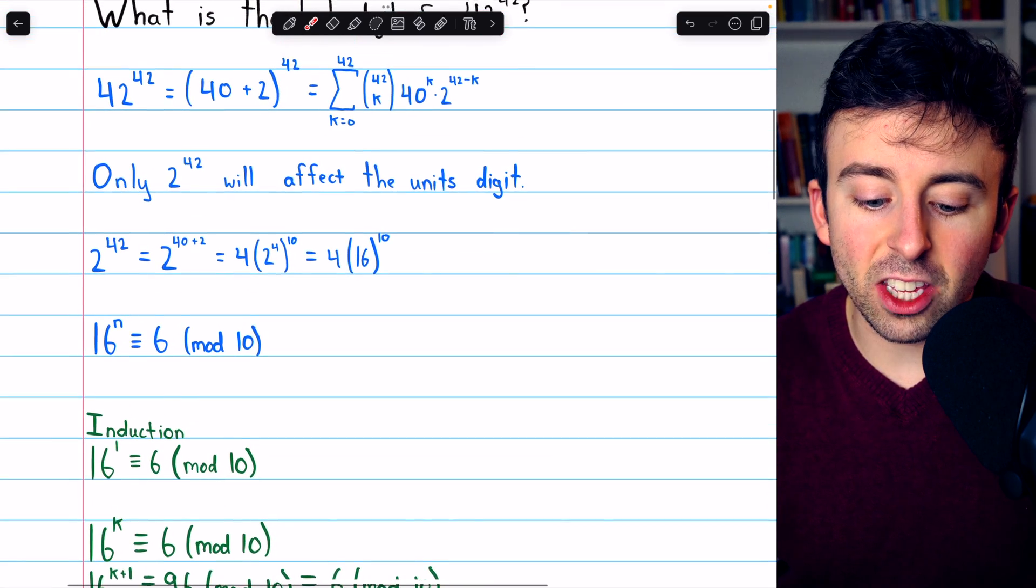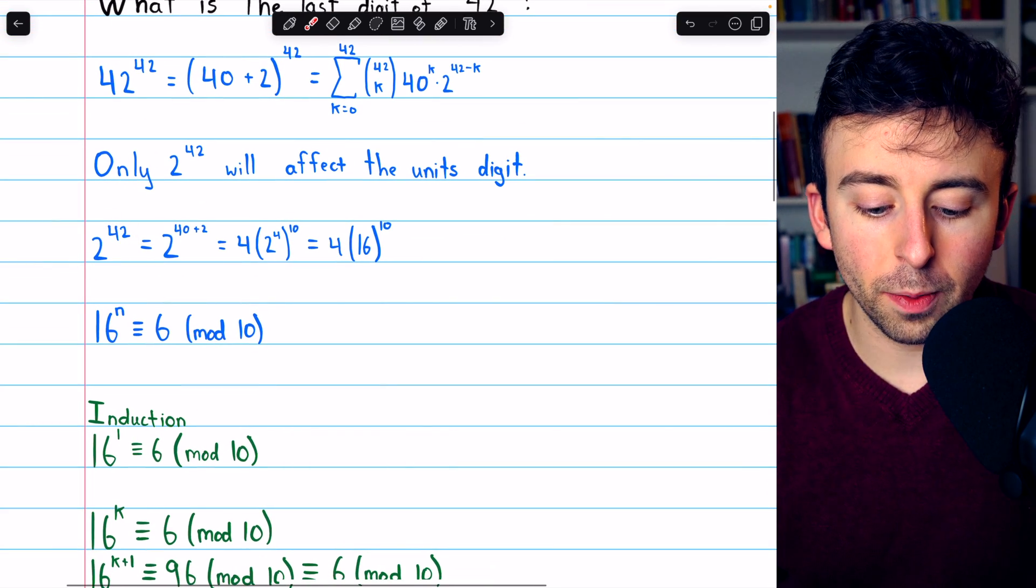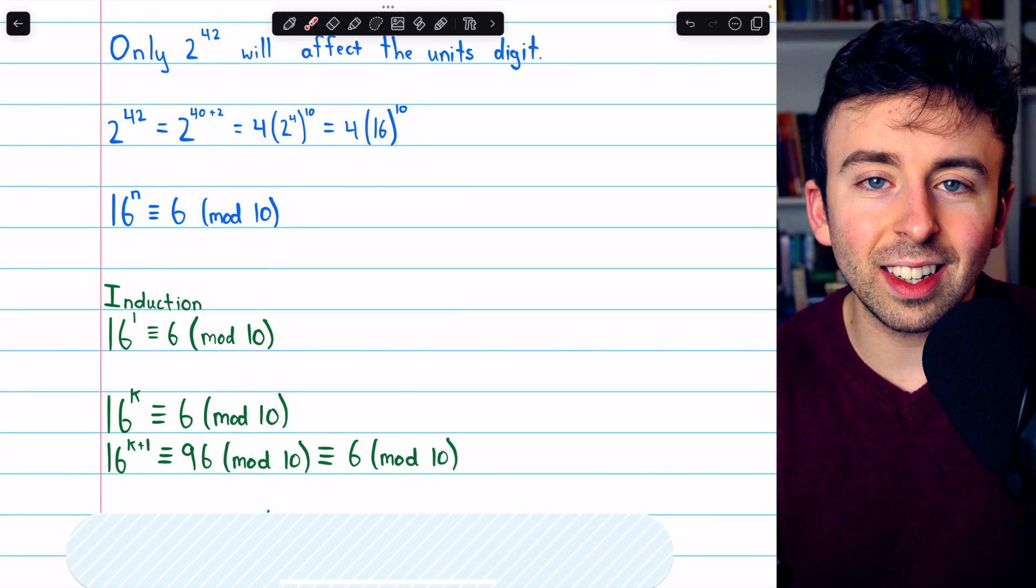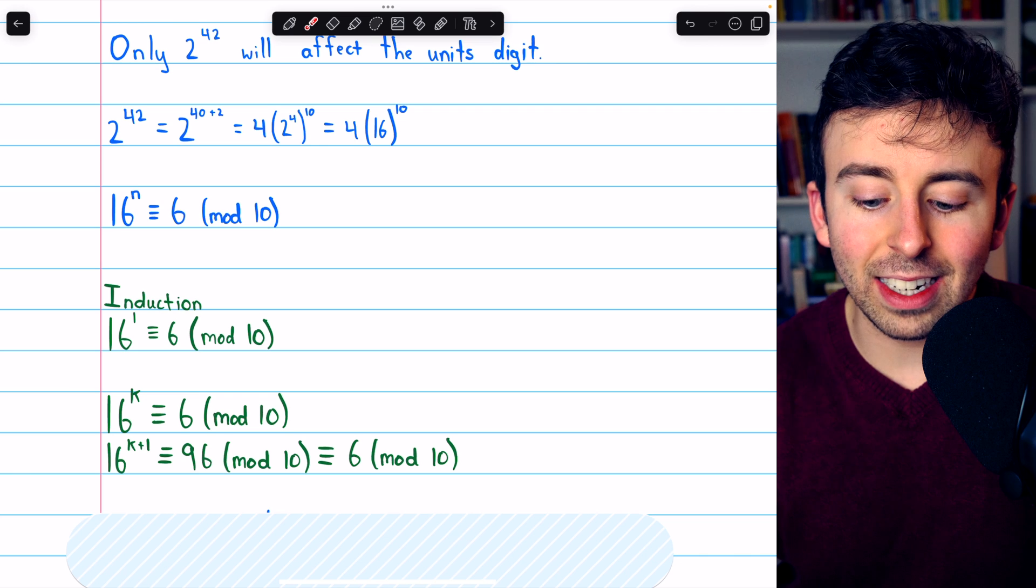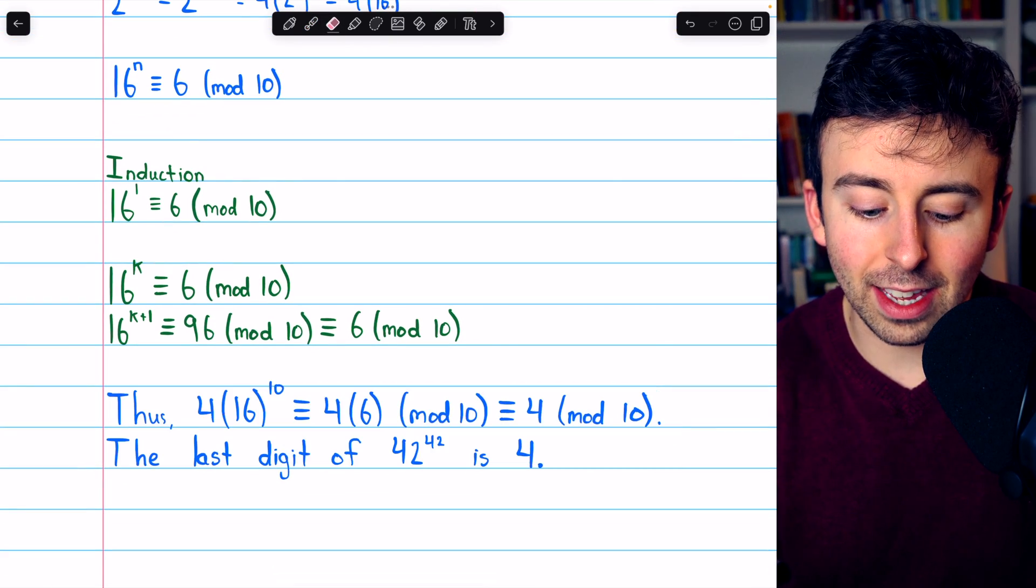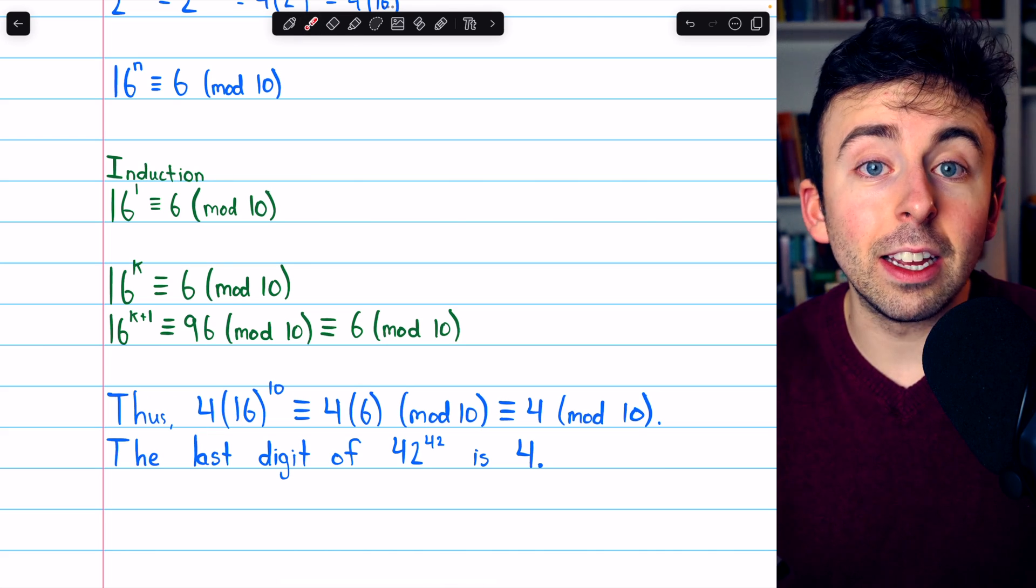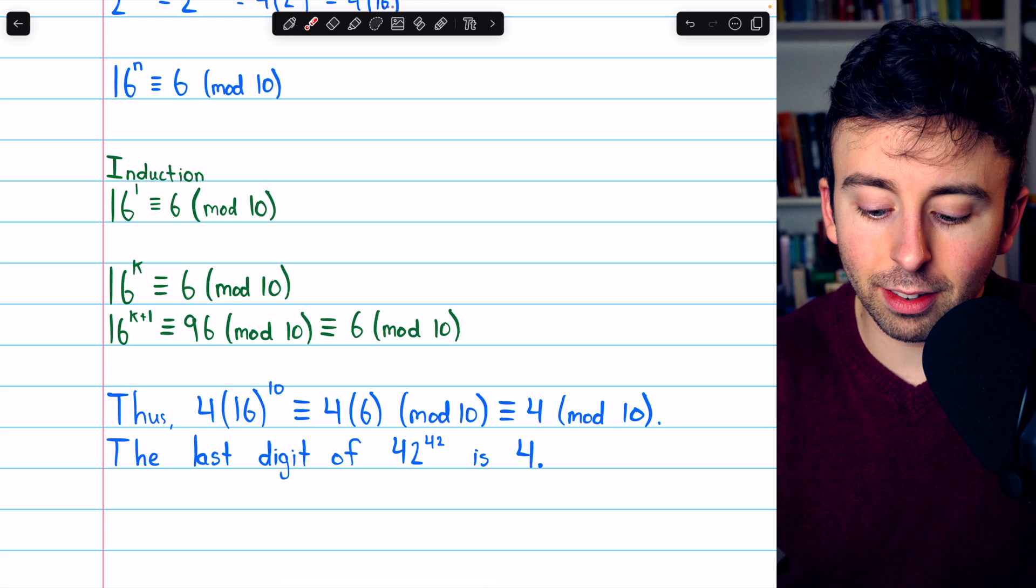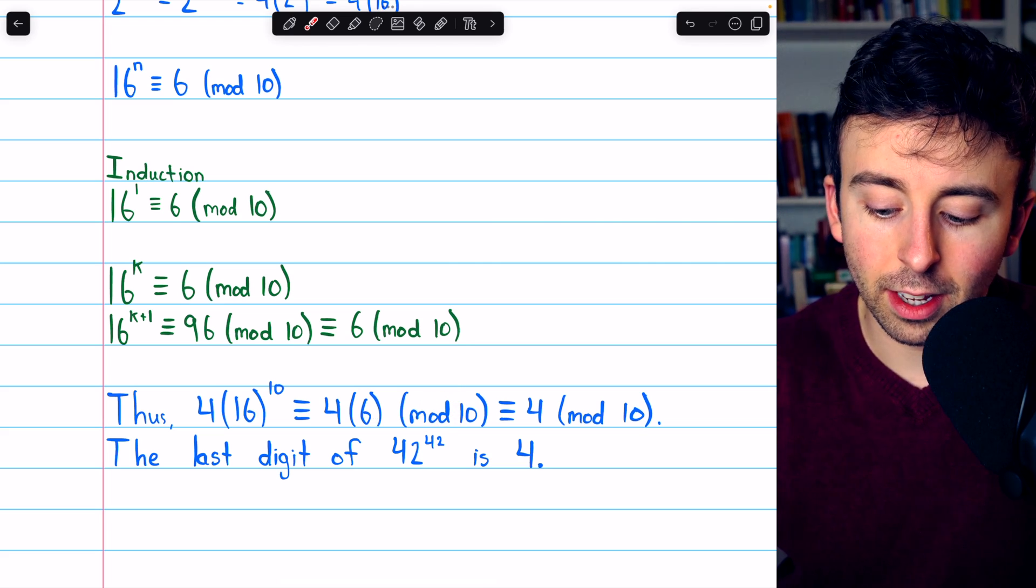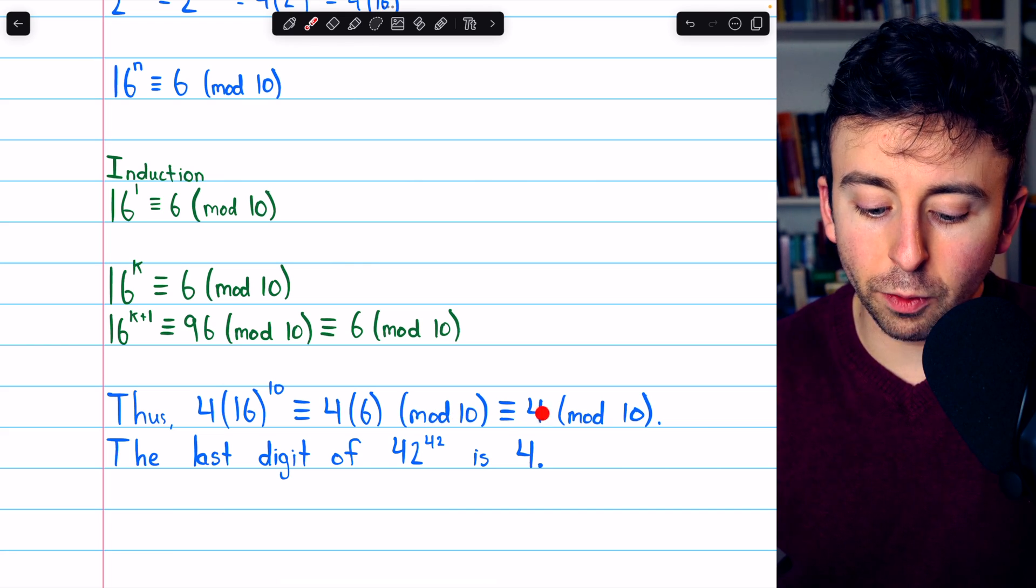So, remember, the only thing affecting the unit's digit of 42 to the 42 is 2 to the 42. But 2 to the 42 is equal to 4 times 16 to the 10. But 16 to the 10 guaranteed has a unit's digit of 6. And so, we have then the answer to our problem. 4 times 16 to the 10 is congruent to 4 times 6 mod 10 because 16 to the 10 is congruent to 6 mod 10. And 4 times 6 mod 10 is congruent to 4.